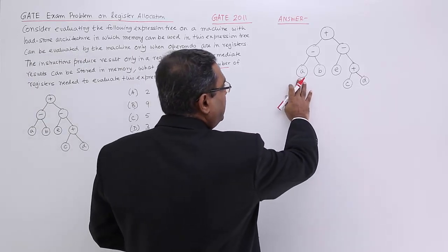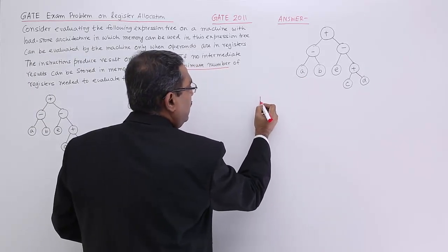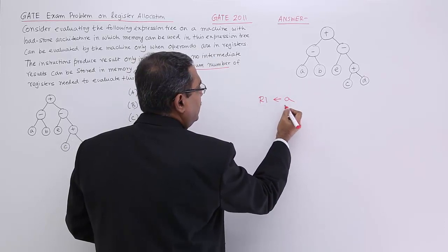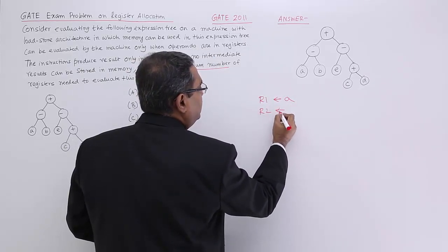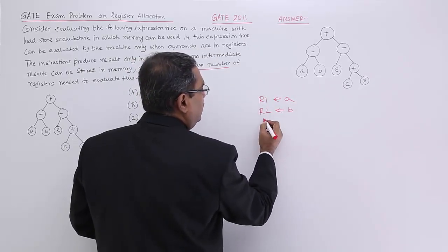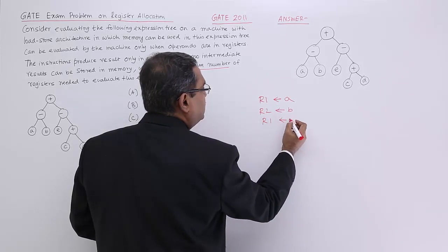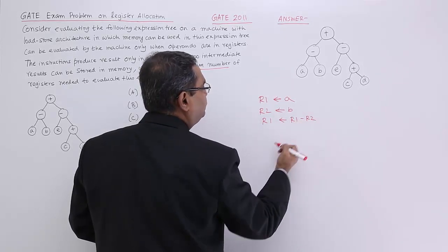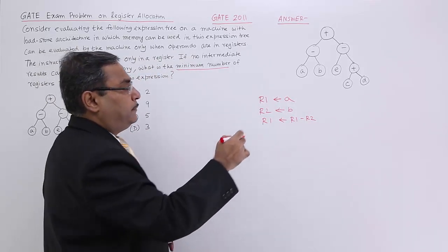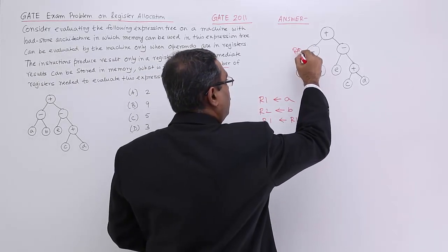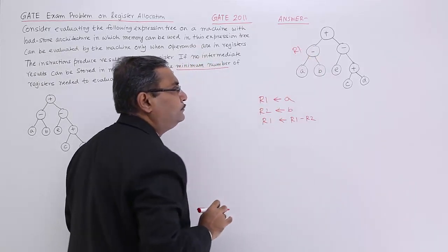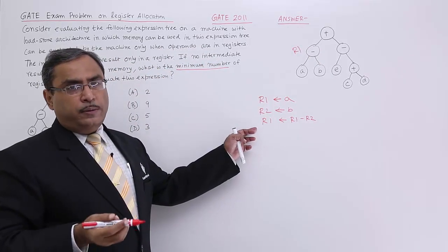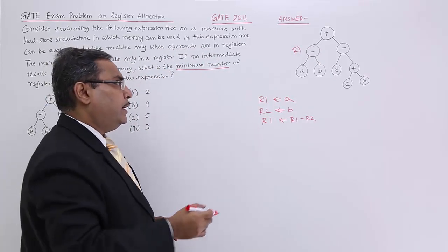Starting from here: R1 will be getting A, R2 will be getting B, then R1 is set to R1 minus R2. So that means this result has been kept in R1. Here R2 has become free, so R2 can be reused.